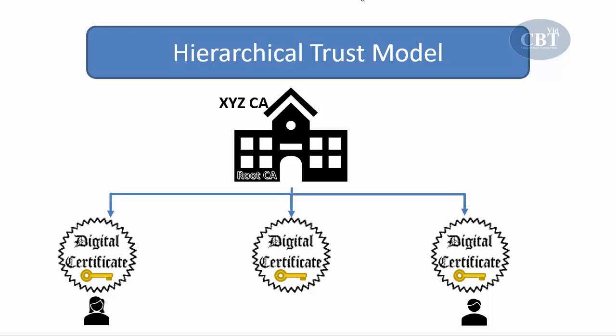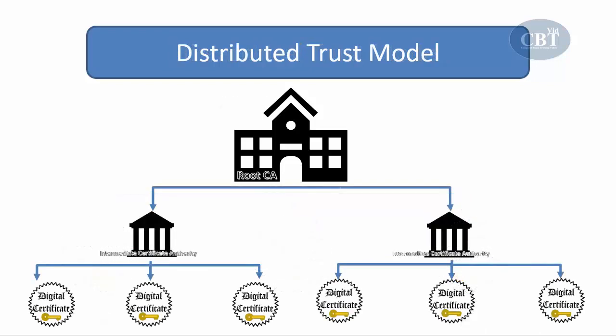The problem with the hierarchical trust model is that it can be used in an organization where one CA is responsible for everyone's digital certificate, but on a larger scale it has limitations and causes bottlenecks. You cannot use one single CA all around the world — it's going to create a lot of backlog. That's why we have another type called the distributed trust model, which uses multiple certification authorities instead of one.